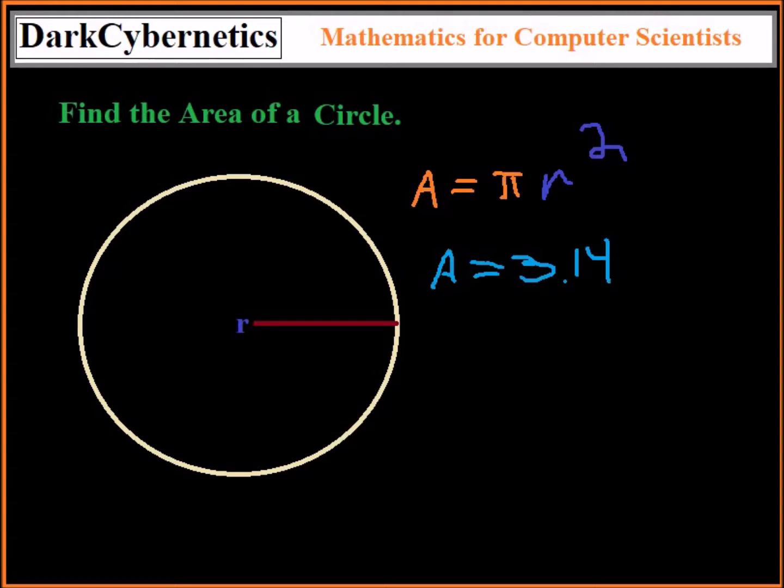In this case, suppose the radius is 3. Let's write 3 in here, squared. We know from PEMDAS - parentheses, exponents, multiplication, division - that 3 to the power of 2 is 9.